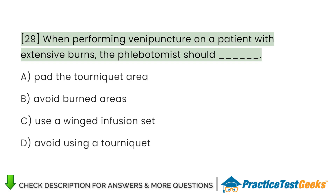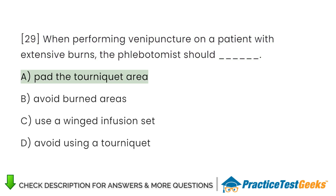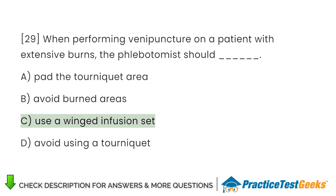When performing venipuncture on a patient with extensive burns, the phlebotomist should A. Pad the tourniquet area. B. Avoid burned areas. C. Use a winged infusion set. D. Avoid using a tourniquet.